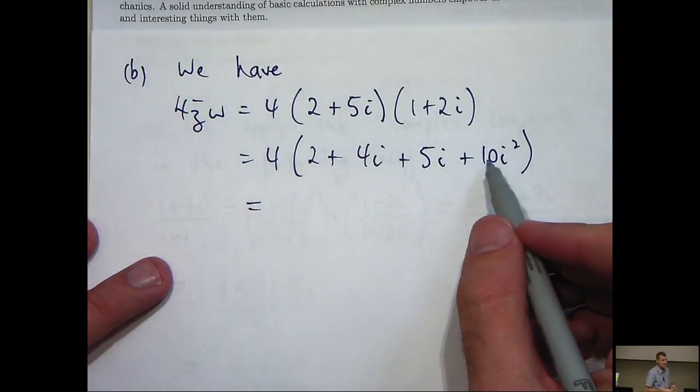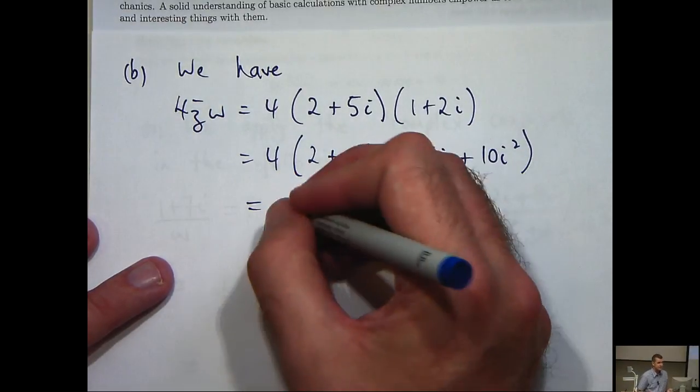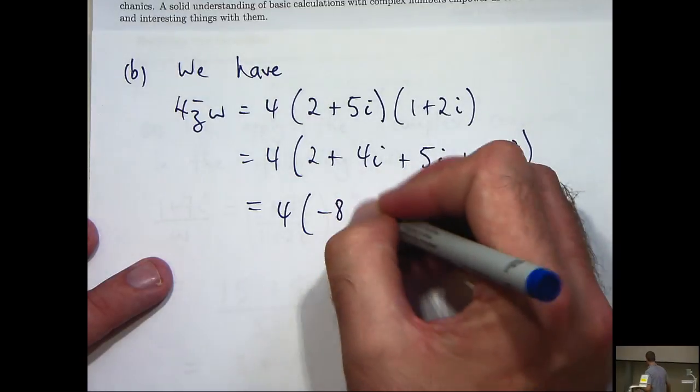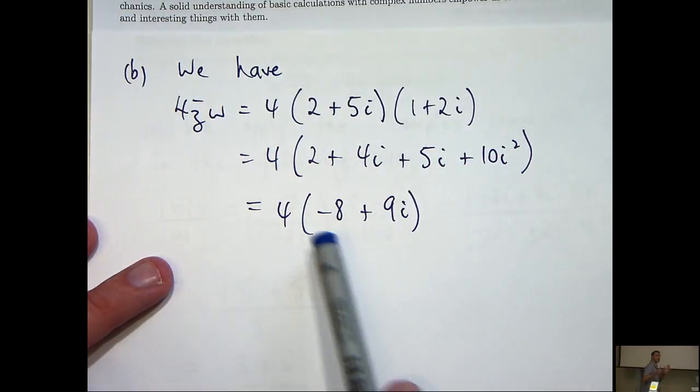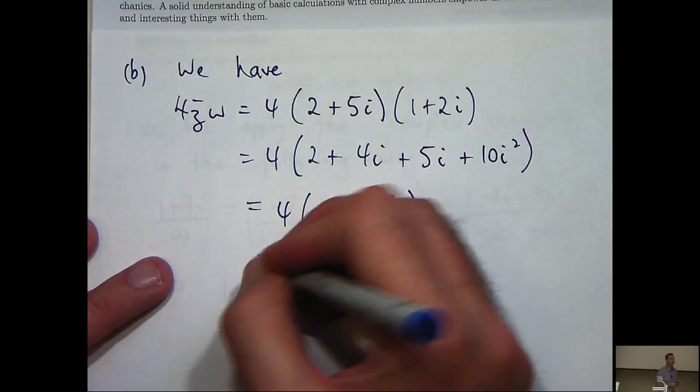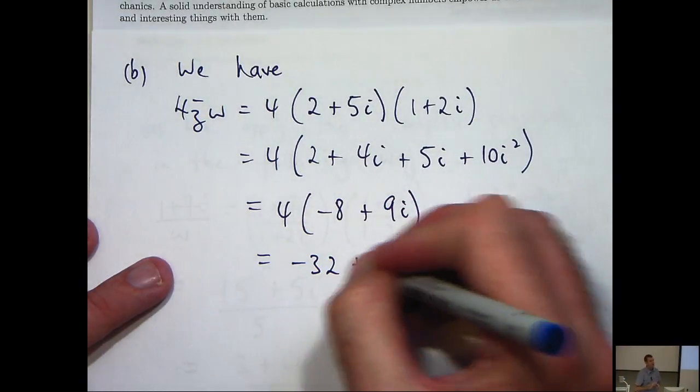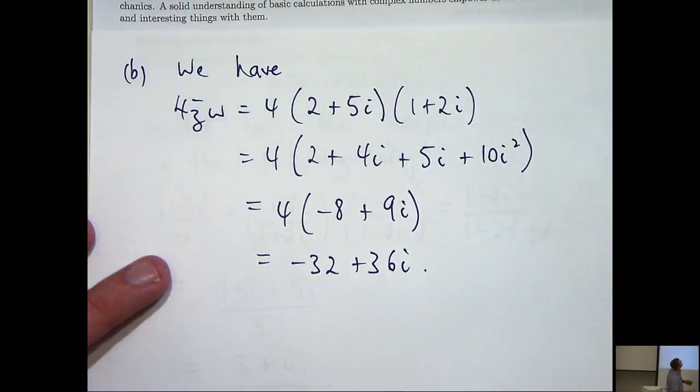Okay so we can add our like terms. 10i squared equals negative 10. And if I really want to I can then just expand these brackets to form our final answer.